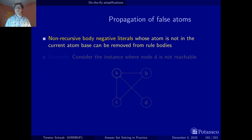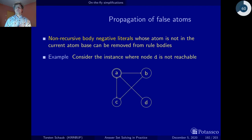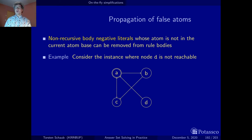Let's look at another instance of the Hamilton cycle problem in which node D is not reachable. Hence there is no path starting from A that visits all the nodes, so this problem instance is unsatisfiable. The question is: can grounding find this out? Will the on-the-fly simplifications be strong enough that the grounder can decide the problem is unsatisfiable?